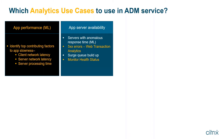For app server availability, we have a server response time with anomalous servers use case — an ML-based use case that has been available for some time. We've added newer use cases: five 5xx access errors visibility, detection of surge queue build-up in front of your virtual servers using the surge queue build-up indicator on the app dashboard, and monitor health status — showing all monitors bound to your services or service groups with statistics like total probes, failed probes, monitor state, and last response.